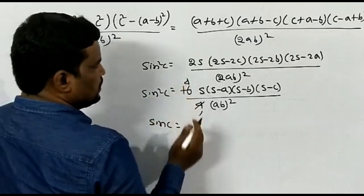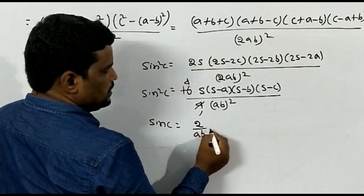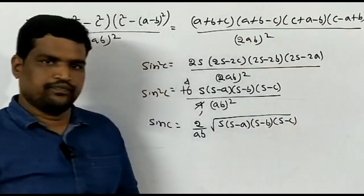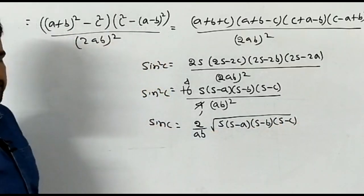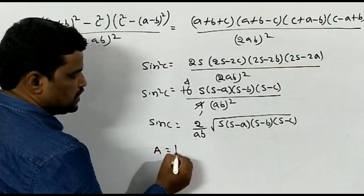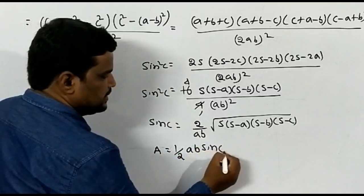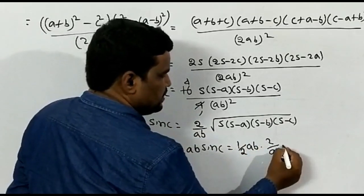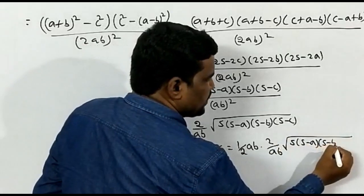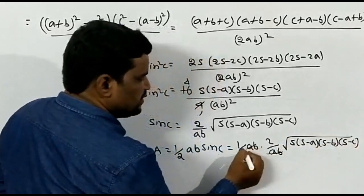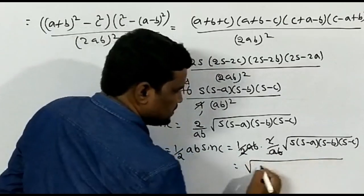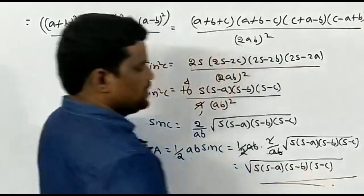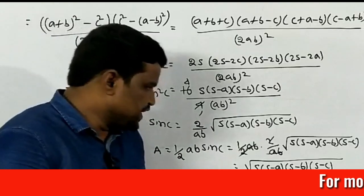Therefore sin C = (2/AB)·√[S(S−A)(S−B)(S−C)]. We know Area = (1/2)·AB·sin C. Substituting sin C: Area = (1/2)·AB·(2/AB)·√[S(S−A)(S−B)(S−C)]. The AB and 2 cancel, giving: Area = √[S(S−A)(S−B)(S−C)] square units. This derives Heron's formula using the cosine rule.